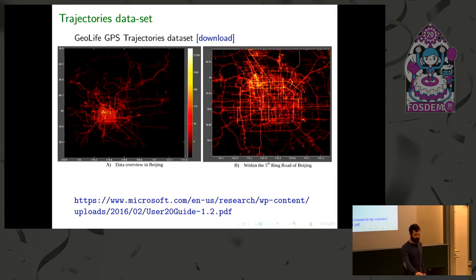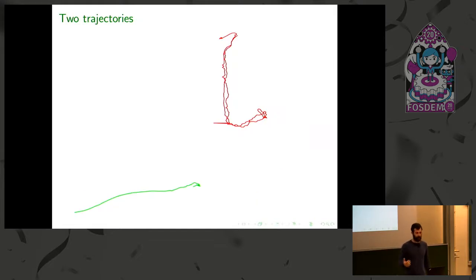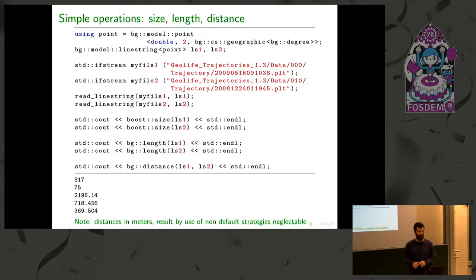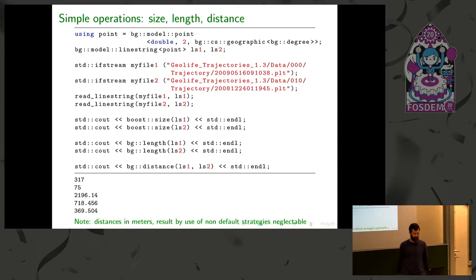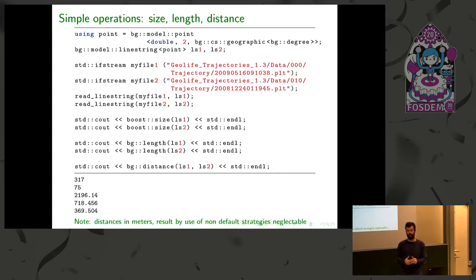I'm selecting two trajectories from the whole dataset to do some simple computations. In my C++ code I define the point type as geographic, create two line strings, load my two trajectories onto the line strings, and then ask for the size — meaning how many points each trajectory has. The first trajectory has 317 points, the second has 75. I can then ask for the length in meters, getting the two lengths.